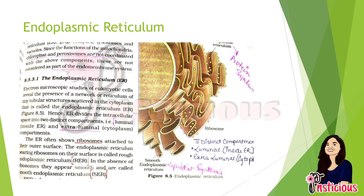The ER divides the intracellular space into two distinct compartments: the luminal region, which is the inside of the ER, and the extra-luminal region, which is the cytoplasm. Some structures without outer boundaries, present in plants and prokaryotes, are known as ribosomes. When ribosomes attach to the outer surface of the ER, it gives a rough appearance, so we call it rough endoplasmic reticulum. In the absence of ribosomes, it appears smooth — we call that the smooth endoplasmic reticulum.